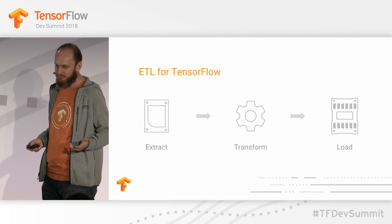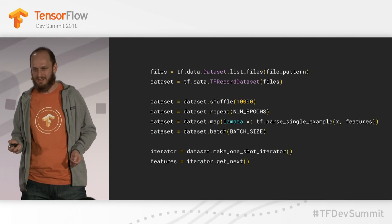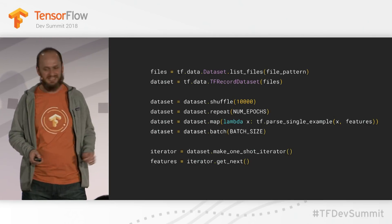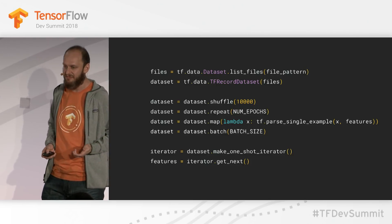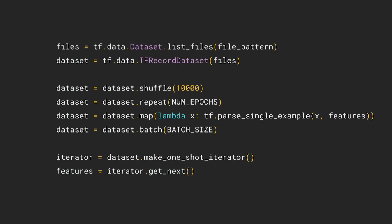Well, that's the high-level pitch. But what does it look like in real code? This is the standard TF data input pipeline for reading a set of example protos from a set of TFRecord files. I bet that 90% of all TensorFlow input pipelines start off this way. In fact, it's so common we've wrapped this very pipeline up in a single utility function. We start the extraction phase by getting a list of files — these can be on your local disk or just as easily in GCS or S3 — and we extract the TFRecords from those files.